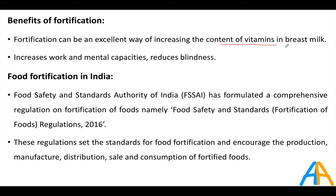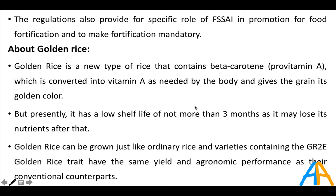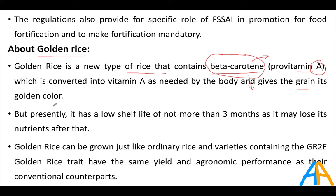Benefits of fortification include increased vitamin content, improved work and mental capacity of consumers, and reduced blindness. Food Safety and Standards Authority of India (FSSAI) certifies food fortification in India. Golden rice contains beta-carotene, a pro-vitamin A from which Vitamin A is produced through a biological reaction. The main disadvantage is its low shelf life — it must be consumed within three months or it loses nutrients. It can be grown just like ordinary rice.